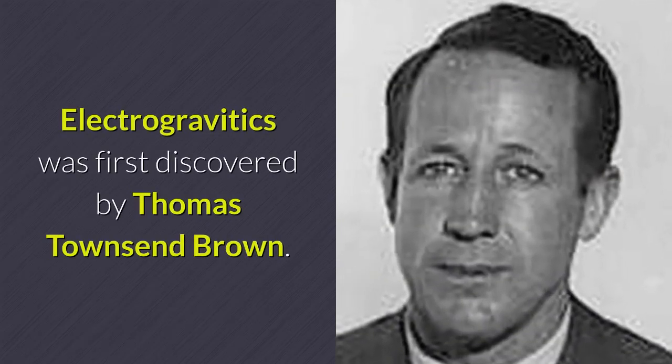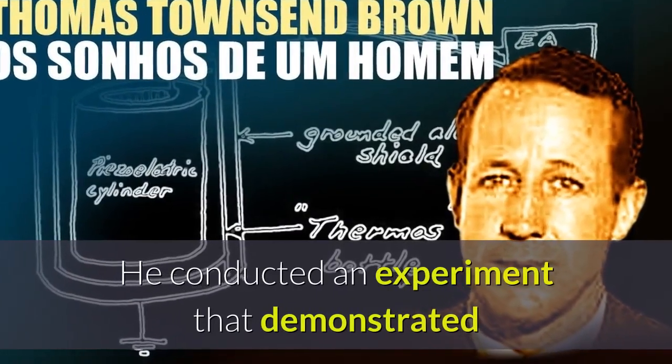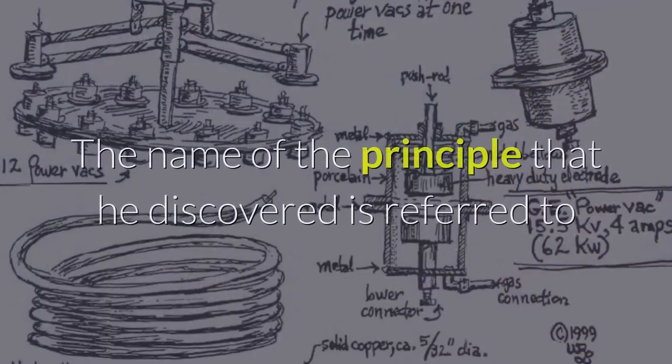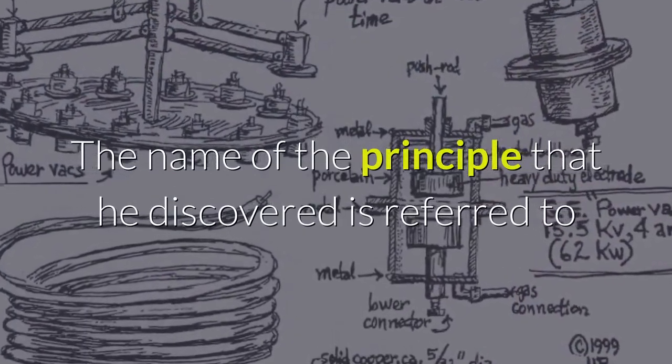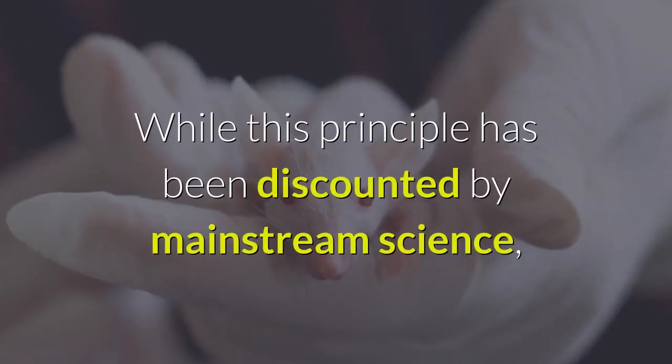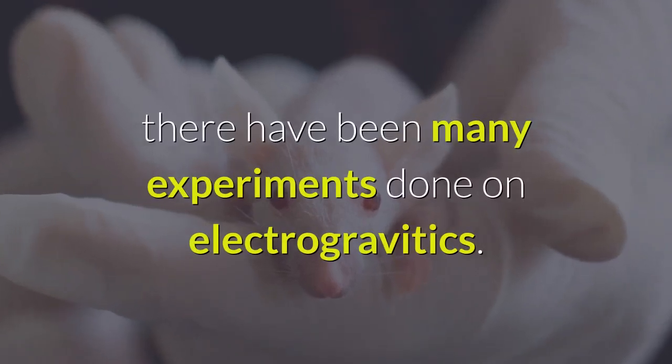Electrogravitics was first discovered by Thomas Townsend Brown. He conducted an experiment that demonstrated that the gravitational forces are weaker on negatively charged matter. The name of the principle that he discovered is referred to as the Biefeld-Brown principle. While this principle has been discounted by mainstream science, there have been many experiments done on electrogravitics.